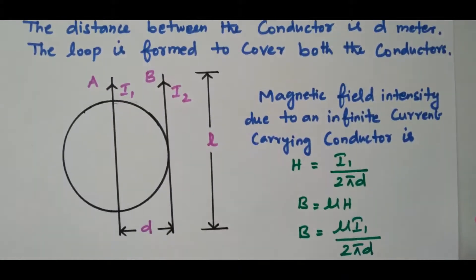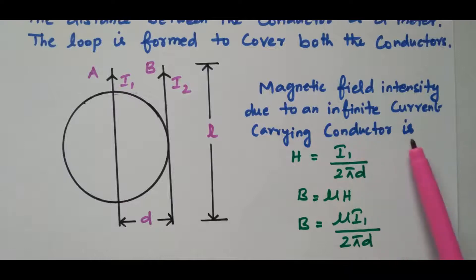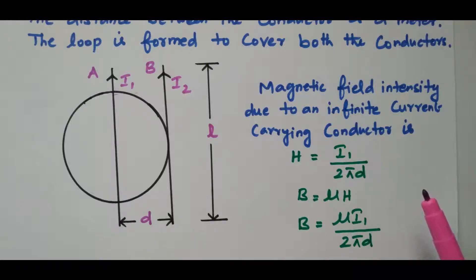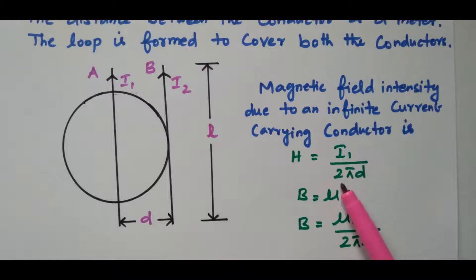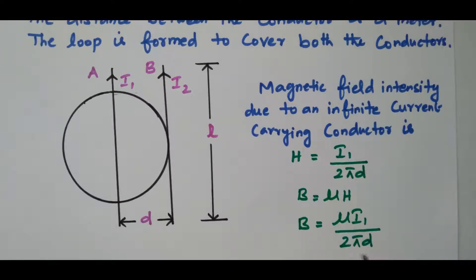What is the magnetic field intensity due to conductor A? For an infinite current carrying conductor, H equals I1 divided by 2πD. Based on Ampere's law — integral H·DL equals I — we get H equal to I1 divided by 2πD, since I1 is flowing through conductor A. Then the magnetic flux density B equals μH, so B equals μI1 divided by 2πD. This is the magnetic flux density due to conductor A.